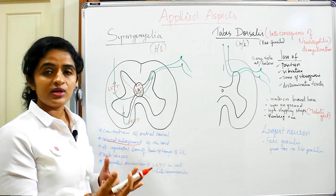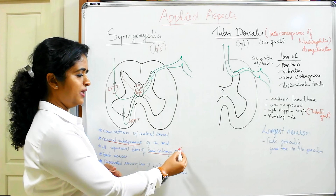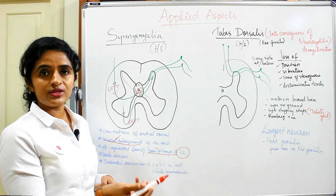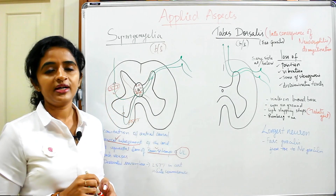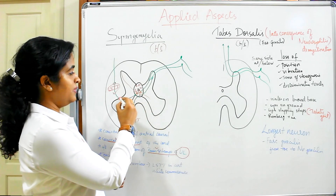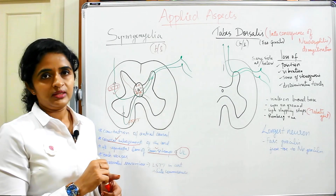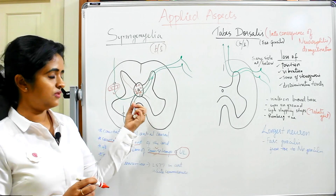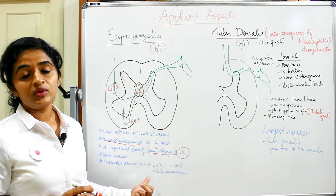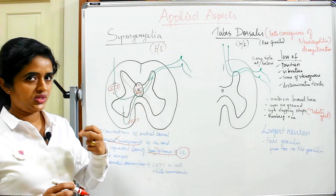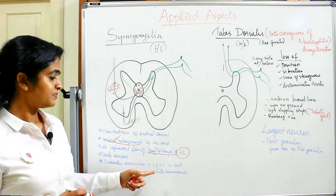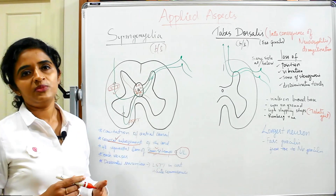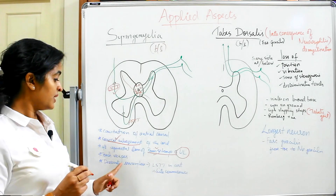There will be bilateral segmental loss of pain and temperature sensation of the upper limb, because it is the cervical enlargement region that is usually affected. Pain and temperature are lost first, meaning the lateral spinothalamic tract is affected first. Touch usually escapes because of the evolving nature of the lesion and the anteriorly placed anterior spinothalamic tract. The posterior column is also spared. This pattern — pain and temperature lost while touch is preserved — is known as dissociated sensory loss.